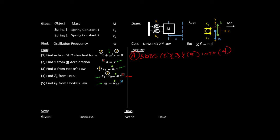Okay, so then minus F1 becomes minus K1 x, minus F2 becomes minus K2 x. Remember, this is F2 and this is F1. And the a becomes an x double dot.